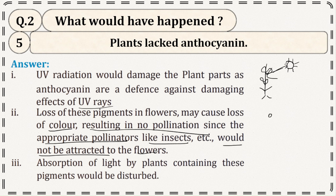What happens is: a colorful flower attracts insects. Insects see the flower, get attracted, and perform pollination — which benefits the plant. But if the flower is not colorful, insects will not be attracted, pollination will not occur, and absorption of light by plants containing these pigments would also be disturbed.